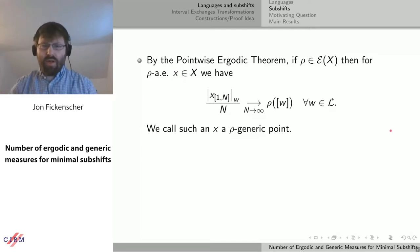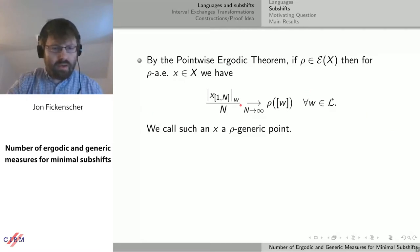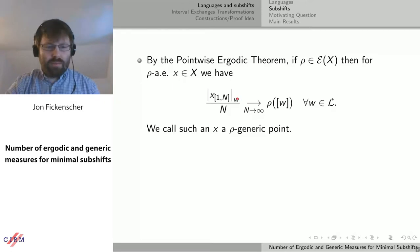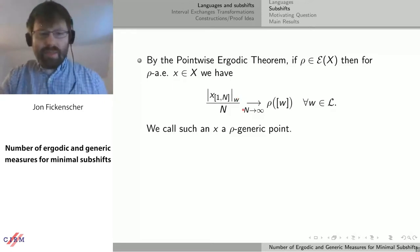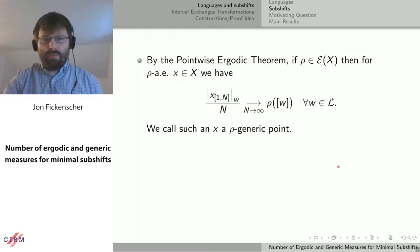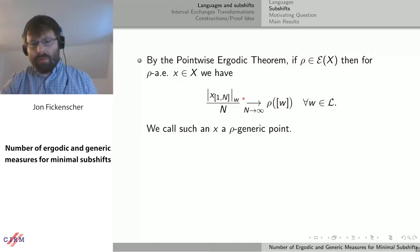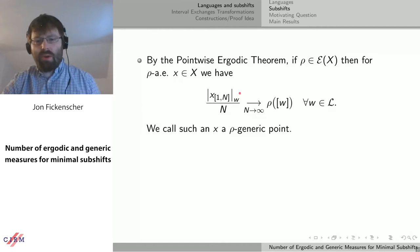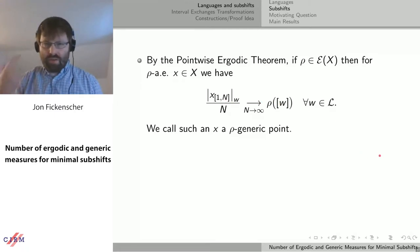Translated into a subshift, if I take one of these sequences and I look at the first n symbols, make that word, and count how often a given word w occurs and divide by the length, that average as n goes to infinity will converge to the measure of the cylinder of that word. We're going to call one of these points a row-generic point.